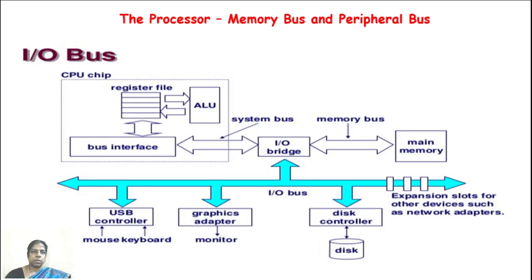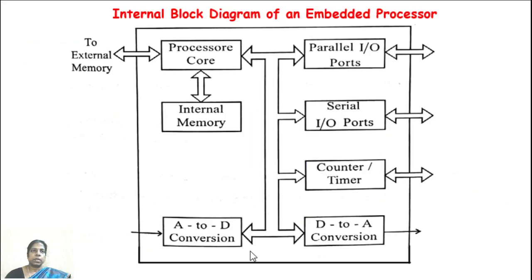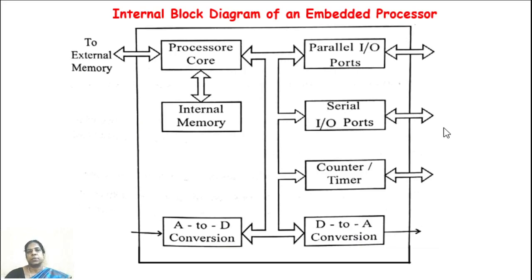The next slide shows the internal block diagram of an embedded processor. Here we see the processor, code memory, and peripheral devices including analog-to-digital conversion, parallel I/O ports, serial I/O ports, counters and timers, and a digital-to-analog converter. All these devices are fabricated on the same IC chip — that is the embedded processor.